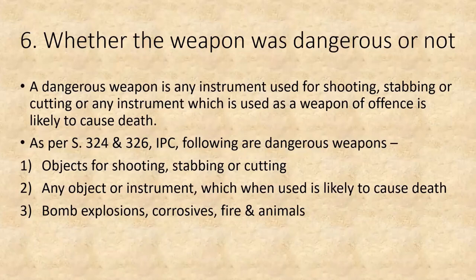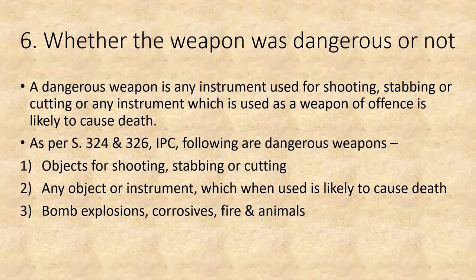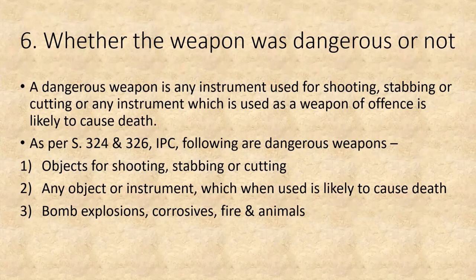The next point is whether the weapon is dangerous or not. A dangerous weapon is any instrument used for shooting, stabbing, or cutting, or any instrument used as a weapon of offence which is likely to cause death. As per Sections 324 and 326 IPC, dangerous weapons include objects for shooting, stabbing, or cutting; any instrument which when used is likely to cause death; and bomb explosions, corrosives, fire, and animals.